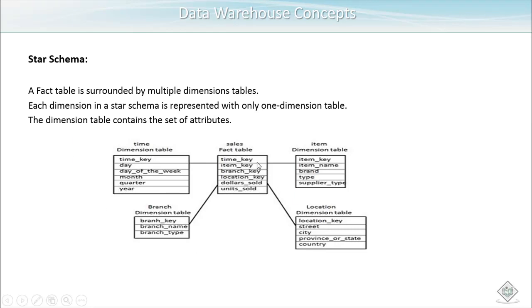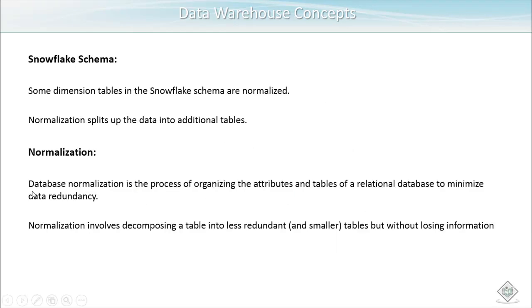The star schema looks like a star. In the middle we have the fact table, which is surrounded by multiple dimension tables. The sales fact table sits in the center with all the foreign keys of the dimension tables, and the dimension tables are joined to the fact table using those keys. Each dimension in a star schema is represented with only one dimension table, and the dimension table contains a set of attributes — for example, the customer dimension contains customer attributes, and the time dimension contains time attributes.